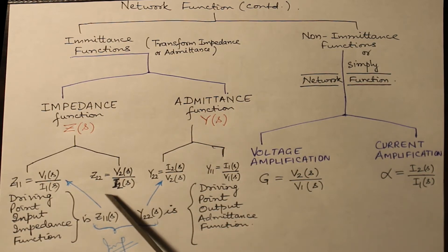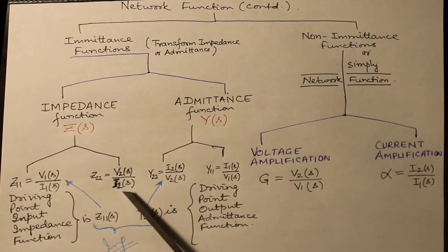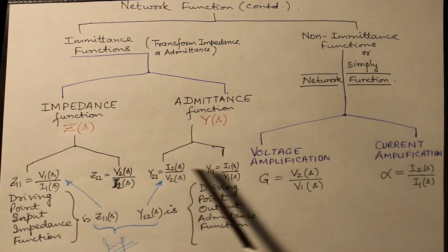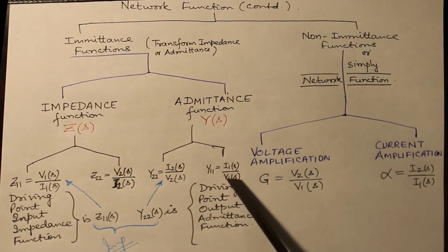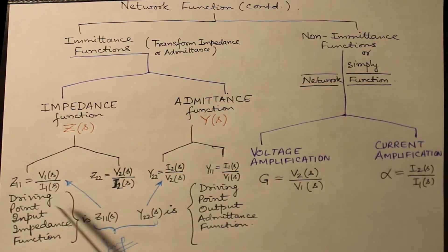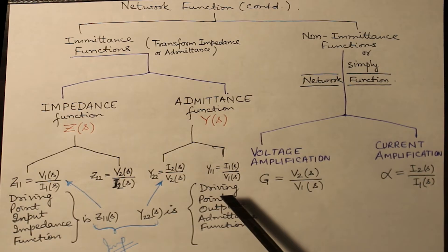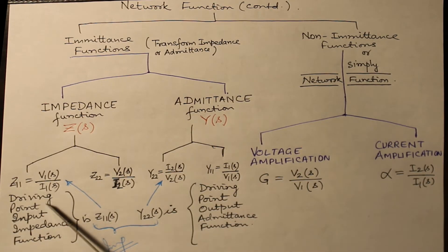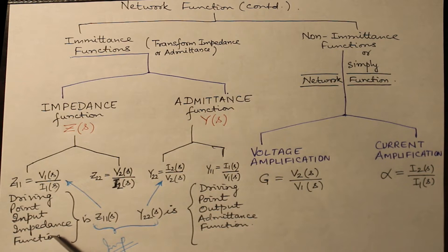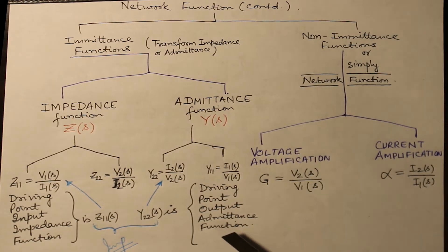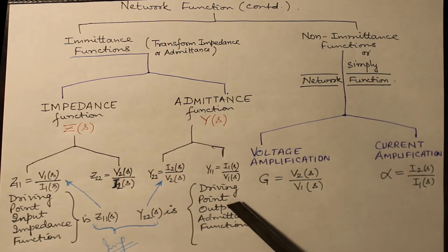Besides these, there are two more functions: Z22, that is V2S by I2S, which is a reciprocal of Y22, and Y11, which is I1S by V1S, which is a reciprocal of Z11. So basically we have driving point input impedance function and driving point output admittance function, where we look at the admittance when some applied voltage is on the output side.